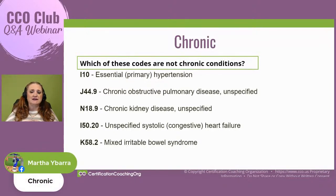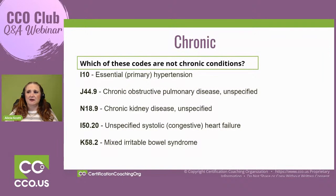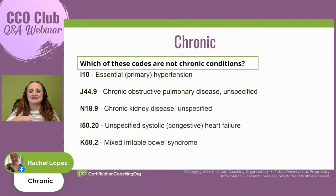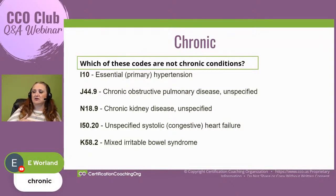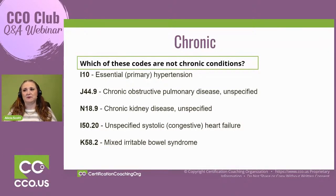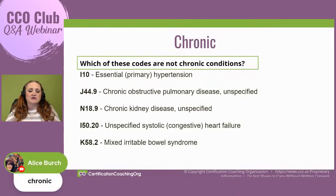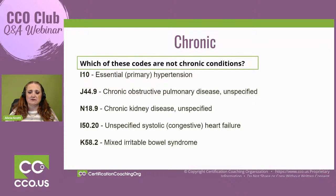And N18.9, CKD unspecified — it doesn't give a stage. Would that be chronic, acute, or neither? Now let's move to CHF: I50.20, unspecified systolic congestive heart failure. Would that be chronic, acute, or neither? And the last one: K58.2, mixed IBS, irritable bowel syndrome — would it be chronic, acute, or neither?